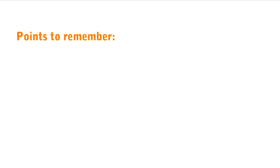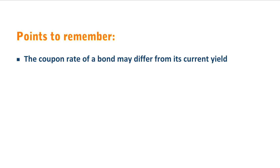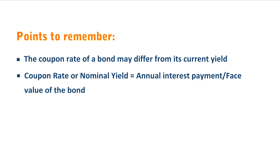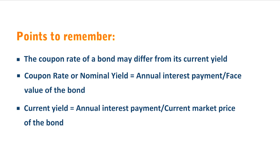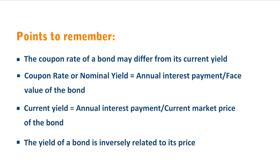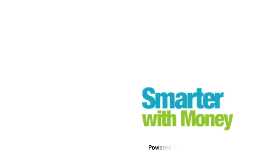Points to remember: The coupon rate of a bond may differ from its current yield. Coupon rate or nominal yield is equal to annual interest payment divided by the face value of the bond. Current yield is equal to annual interest payment divided by the current market price of the bond. The yield of a bond is inversely related to its price.